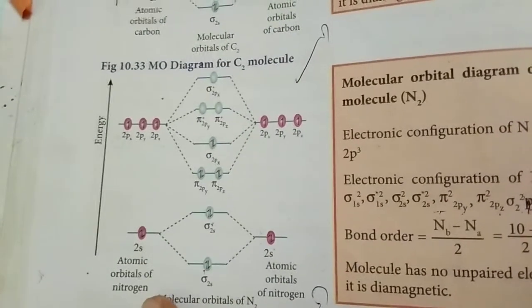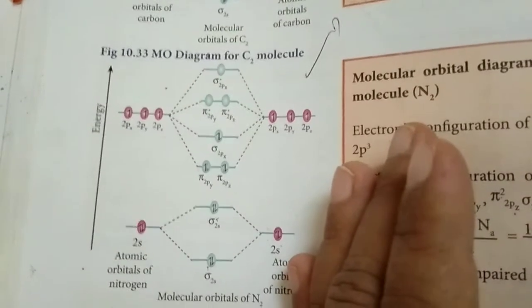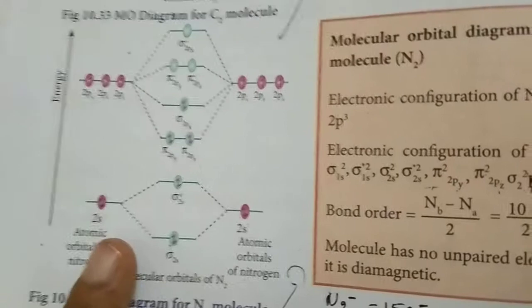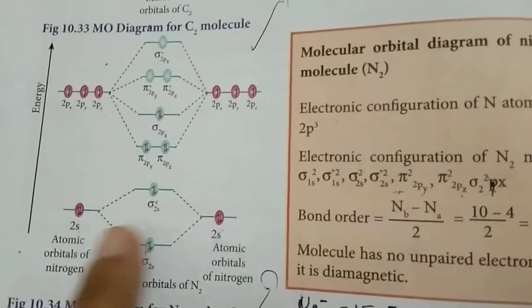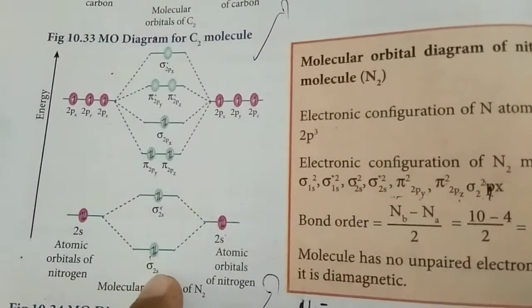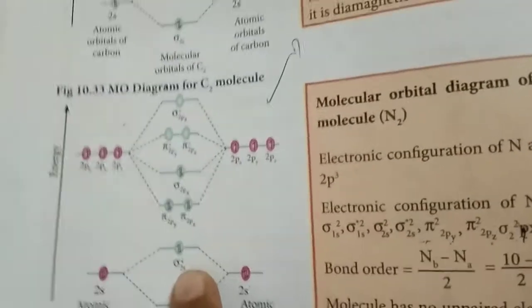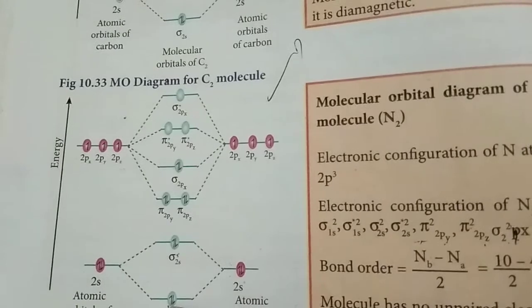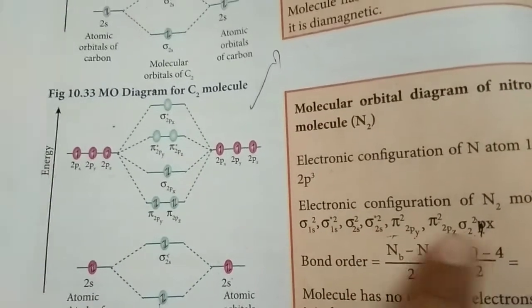In the MO diagram, the left side represents one nitrogen atom and the right side represents the second nitrogen atom. The outer electronic configuration of nitrogen is 1s², 2s², 2p³, where 2p³ represents the valence electrons. For the 2s level, each nitrogen contributes 2 electrons — one electron from each side fills the bonding σ2s orbital and one fills the antibonding σ*2s orbital. Bonding orbitals are labeled sigma and antibonding orbitals are labeled sigma star.